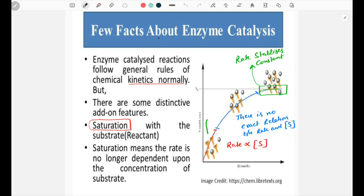If we look here, enzymes are available so that reactants can attach to them. At this stage, most of the enzymes have been attached to the reactant molecules. But in the saturation phase, all enzymes are occupied, and this molecule now has no enzyme available in order to undergo a faster chemical reaction.